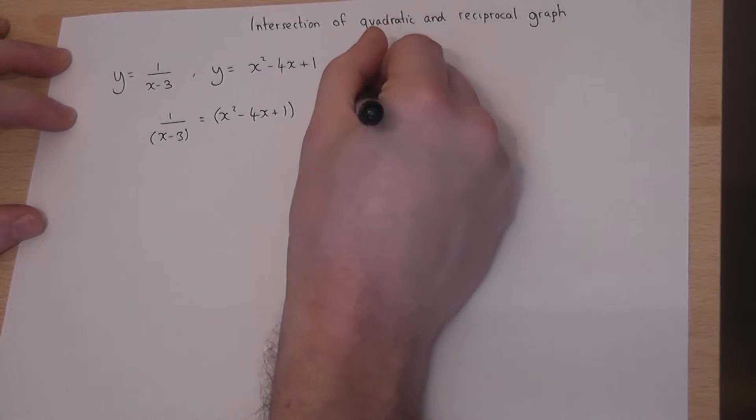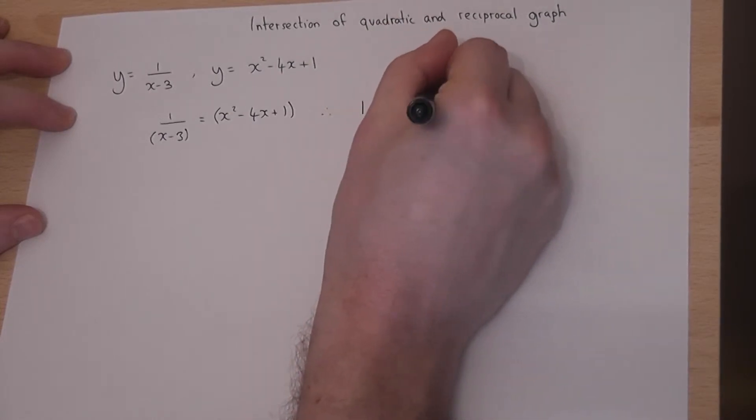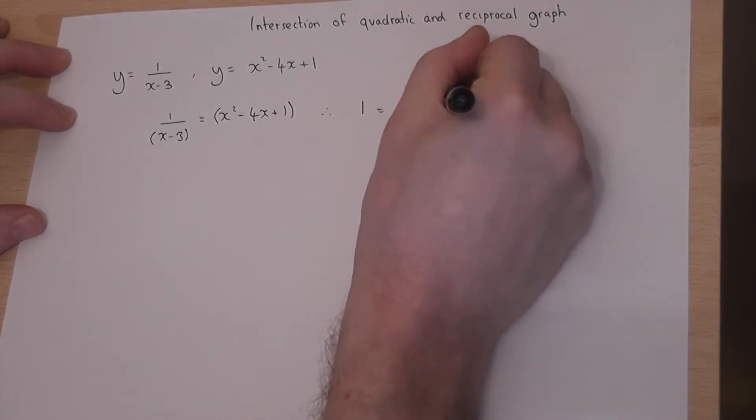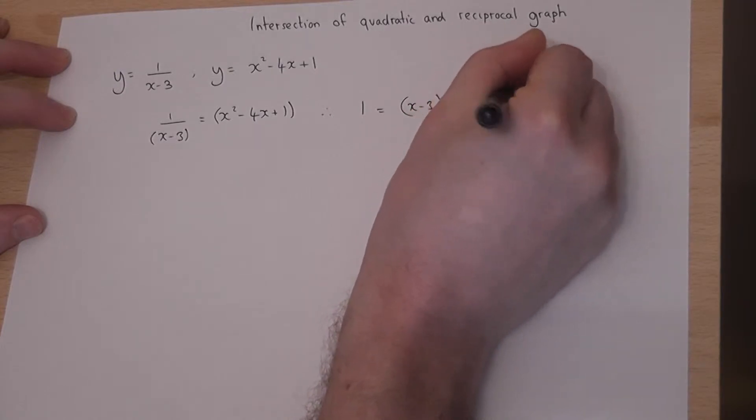I get 1 is equal to (x-3) bracket (x² - 4x + 1).